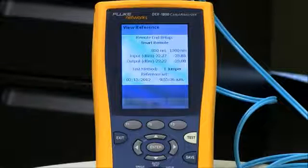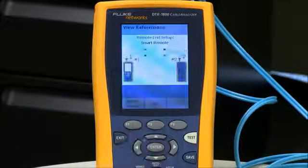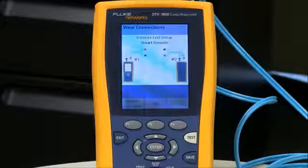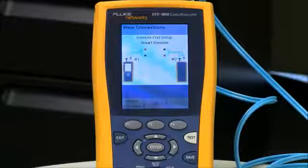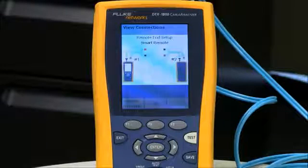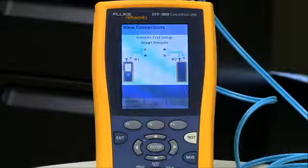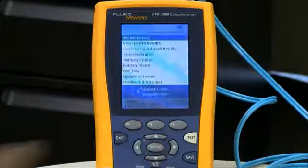So, everything looks fine there. I'm going to hit the F2 OK key. I have the option here of putting in the length of the cords that I'm using for testing today. Again, that's not going to affect the outcome of the test result, but it will show up in your linkware report on your PC. So, I'm going to press F2 OK.